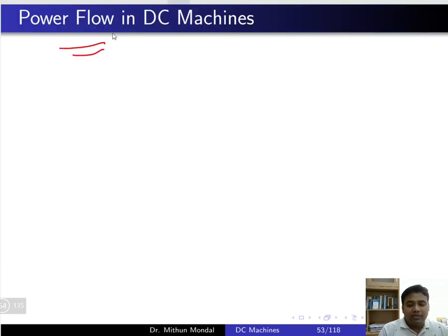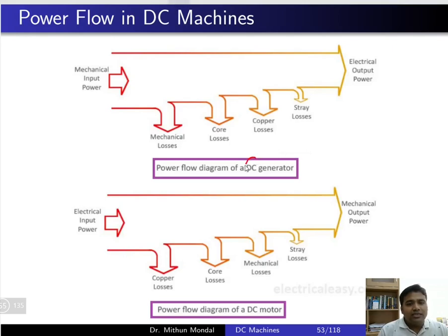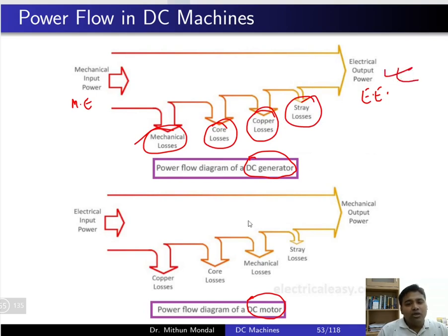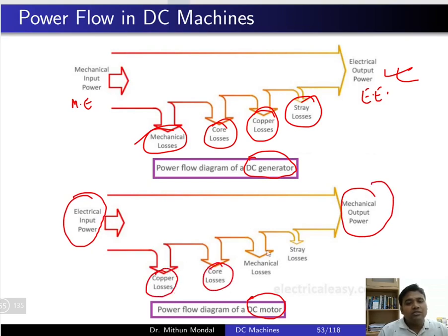Now let us see the power flow in the DC machine — first for the DC generator and then for the DC motor. In the DC generator, mechanical energy is converted to electrical energy output. The losses encountered are: mechanical losses first, then core losses, then copper losses, and then stray losses to get the electrical power output. For a motor, you have electrical power input and mechanical power output, with copper loss first, then core loss, then mechanical losses, then stray losses.